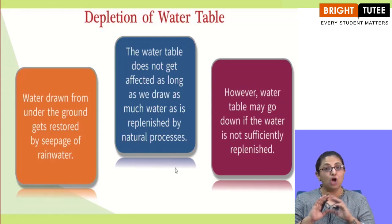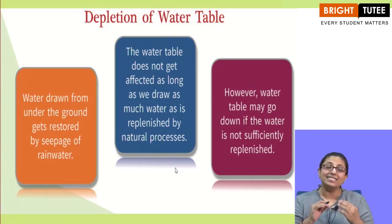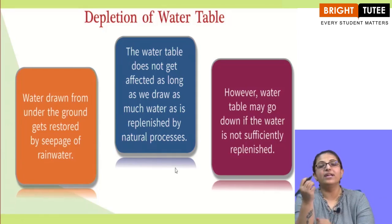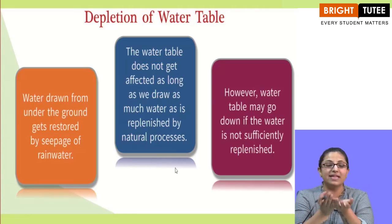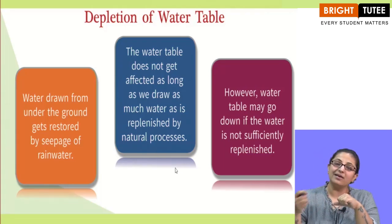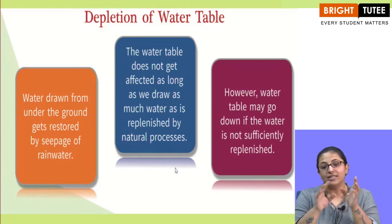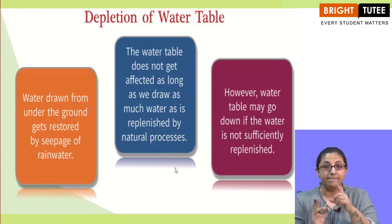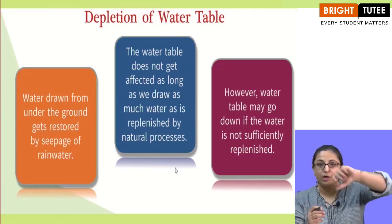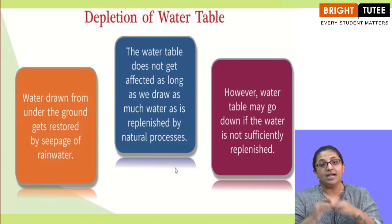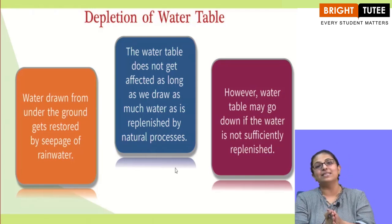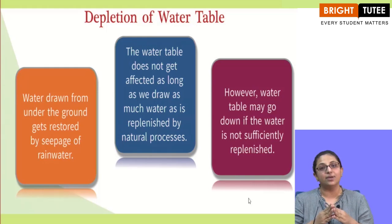The water table is not affected only as long as the water is being replenished at exactly the same level as has been drawn out. For example, suppose there is a container filled with water and you take out one glass of water. That container is less by one glass, but if you put it beneath a tap and open it, the container is again filled. Similarly, if the amount of water drawn from the ground is exactly seeping back in, the water table is maintained.